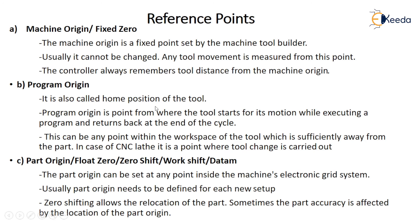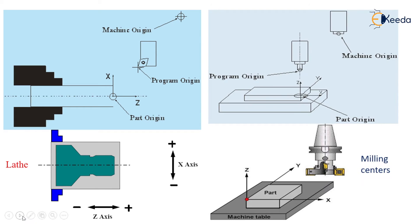Reference point: machine origin or machine zero. Remember, machine origin is nothing but a fixed point set by the machine tool builder. Usually it cannot be changed. Any tool movement is measured from this point. The controller always remembers the tool distance from the machine origin. If you observe the next slide, you will definitely understand the machine origin.